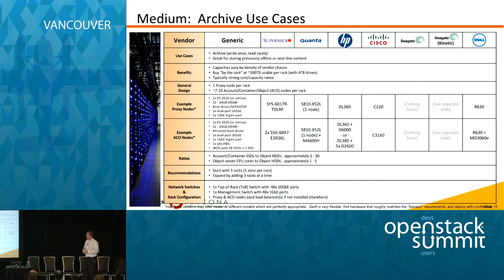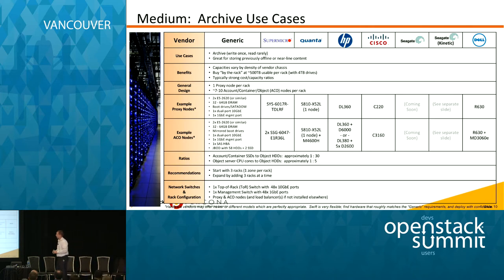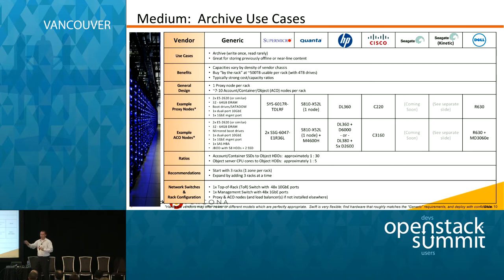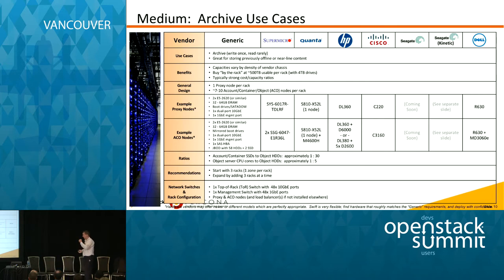Swift can be deployed on a variety of industry-standard hardware. The common reference architecture — and these are flexible, not hard-and-fast rules — shows on the left-hand side what it looks like to piece together memory, RAM, CPU, and networking, and this applies across a whole range of vendors providing hardware in your data centers today.